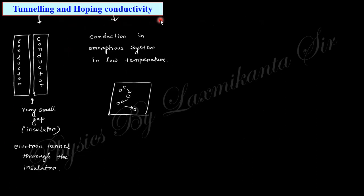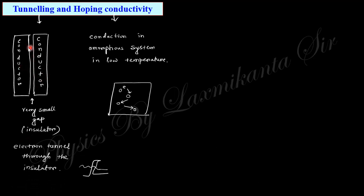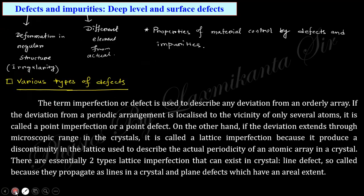Now, tunneling and hopping conductivity. Tunneling occurs when two conductors are separated by a very small gap — the potential barrier allows electrons to tunnel quantum mechanically, as discussed in previous lectures. This gives tunneling conductivity. Hopping conductivity applies to amorphous systems where there are available localized states; electrons jump between these states, making a contribution to conductivity. This is hopping conductivity.